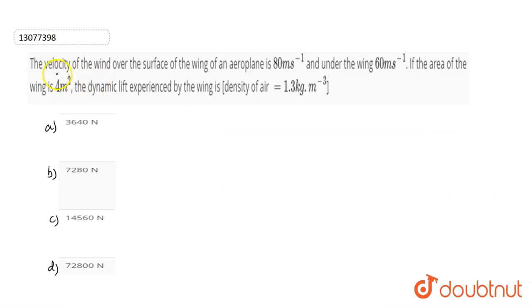In this question, we have given the velocity of the wind over the surface of the wing of an aeroplane is 80 meters per second and under the wing is 60 meters per second. If the area of the wing is 4 meters square, the dynamic lift experienced by the wing is, and the density of the air is 1.3 kg per meter cube.